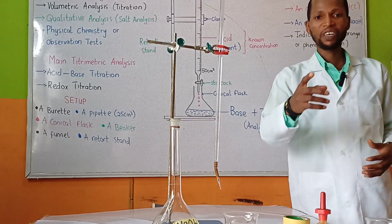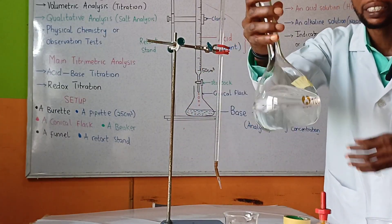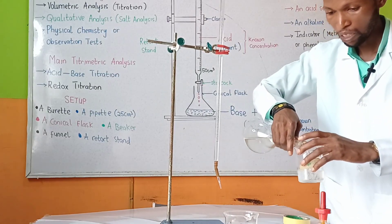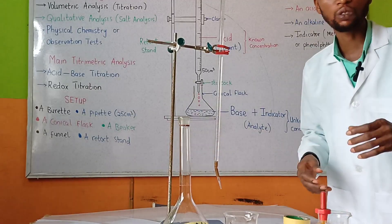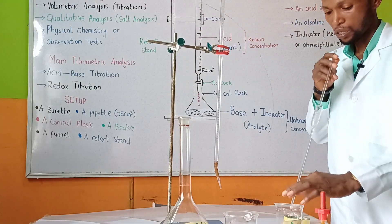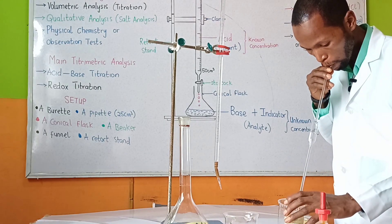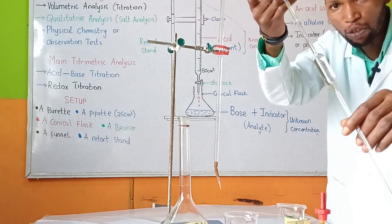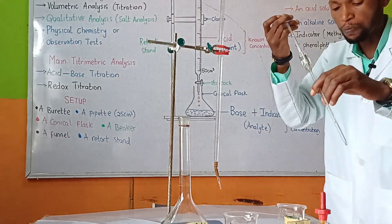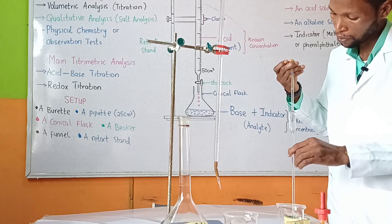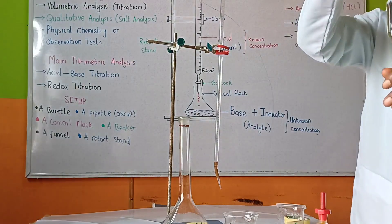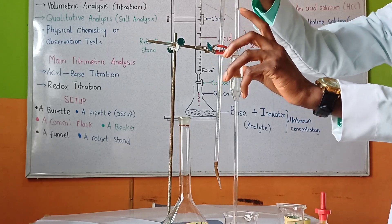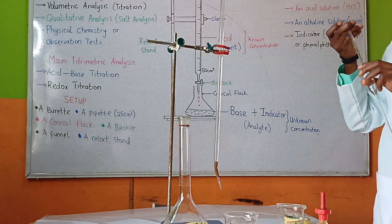In this standard volumetric flask I have my sodium hydroxide. I'm going to introduce it into the beaker and then pipette the solution of our base using our pipette. I will ensure that it is at exactly the 25 mL or 25 cm³ mark — reading at the meniscus. That's 25 mL or 25 cm³ for the pipette.